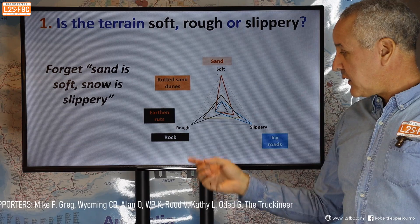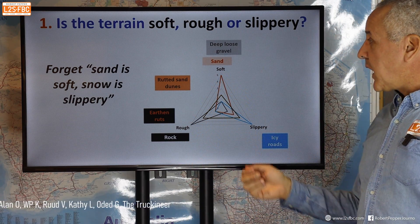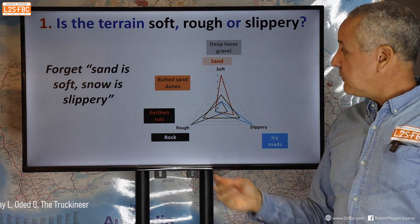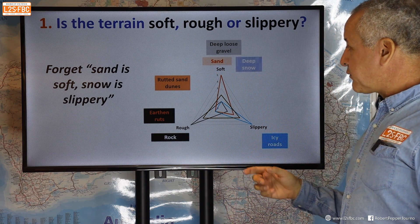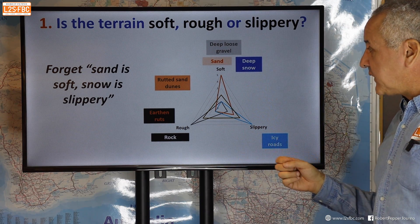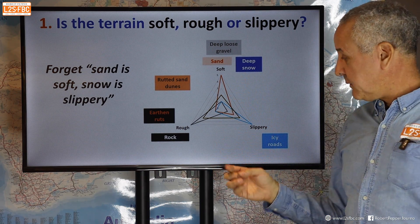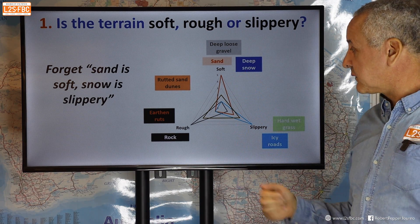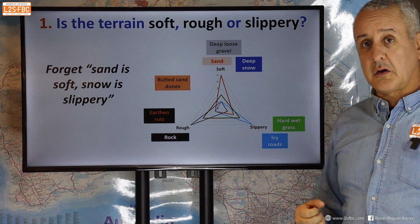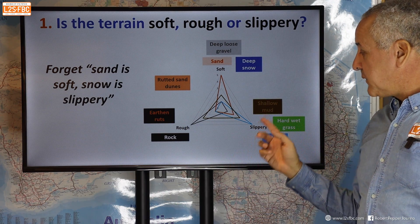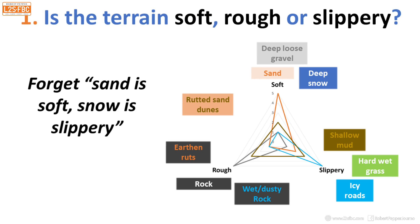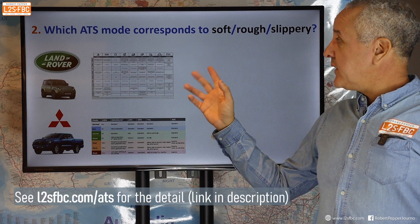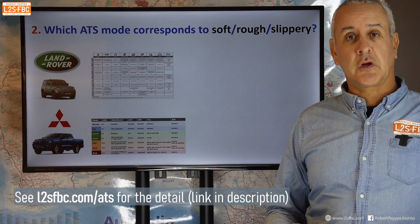Deep, loose gravel is probably more soft — you'd sink into it rather than slip. Deep snow is really soft and might be slippery too, but probably more soft than anything else. Hard, wet grass is very slippery. Shallow mud is probably more slippery than soft. Wet, dusty rock is certainly rough but also slippery. Step two: look at which ATS mode corresponds to soft, rough, or slippery for your vehicle.